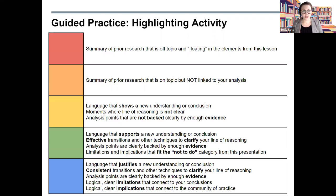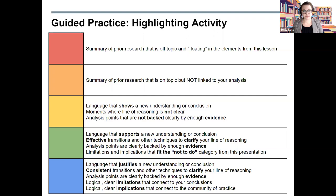Highlight anything red in your draft if it looks like a summary of prior research that is off-topic and floating in the elements from this lesson. Floating means your information is not relevant to your topic and is simply just there — some people call this fluff or filler. If you have floating information or citations, find ways to either remove this content or redirect it to connect to your topic and analysis. Highlight anything orange that is prior research which connects to your topic but is not linked to your analysis. Think about the paragraph cycle we discussed earlier — if you've broken the cycle with a paragraph of unconnected information, that is problematic for your reader.